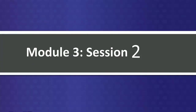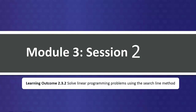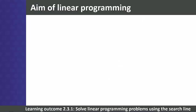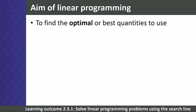Module 3, Session 2 will cover learning outcome 2.3.2: solve linear programming problems by optimizing a function in two variables using the search line method. The aim of linear programming is to find optimal or best quantities to use.